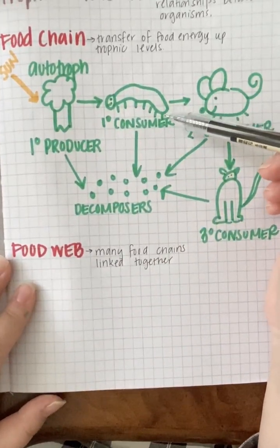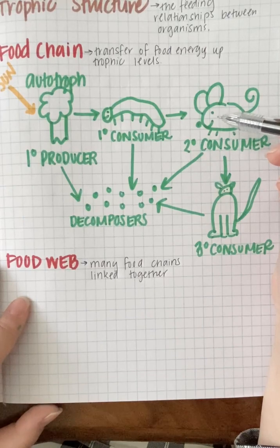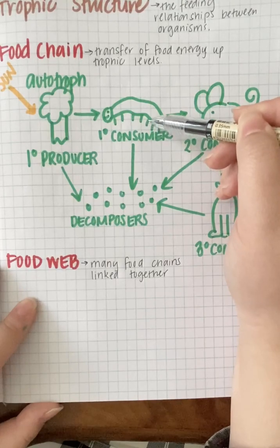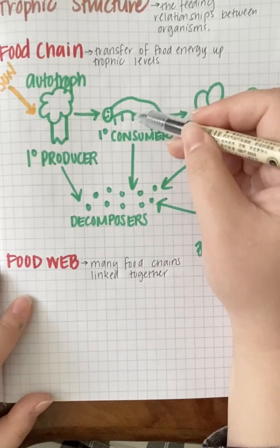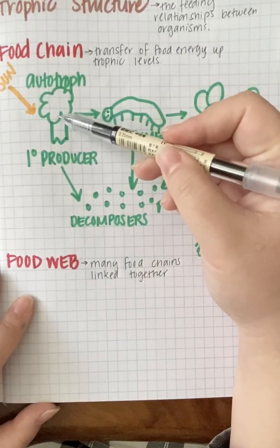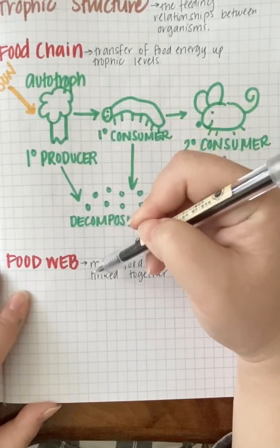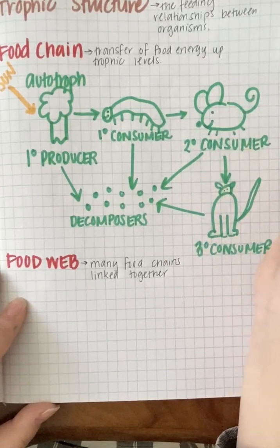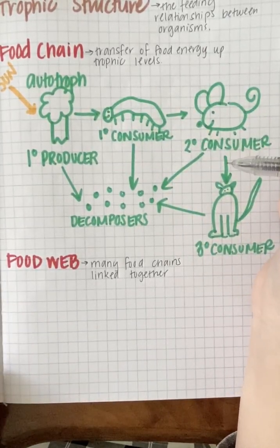In a food web, an organism often belongs to multiple trophic levels. For example, a human is an omnivore — we eat cows, making us secondary consumers, but we also eat plant material, making us primary consumers too. In a food web the trophic levels get blurry because it shows all eating patterns instead of just a single linear one.